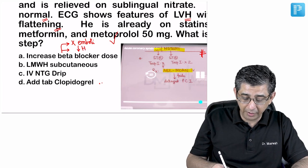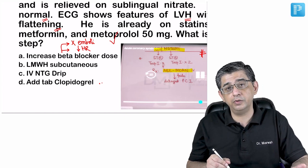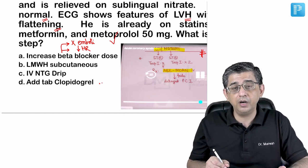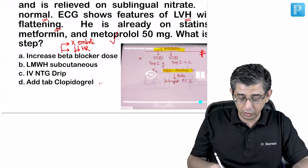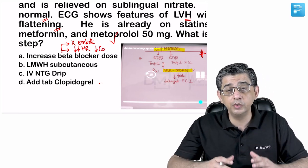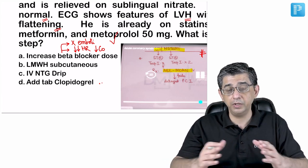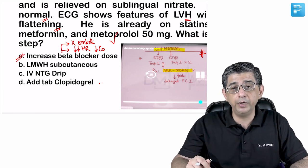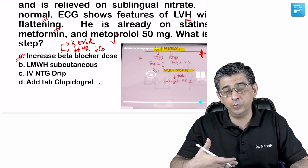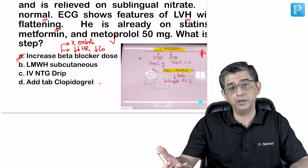If we increase the beta blocker from 50 to 100 mg, the heart rate may drop dramatically. A significantly lower heart rate can decrease cardiac output and coronary blood flow, paradoxically worsening the chest pain. Option A can actually be counterproductive — reduced coronary blood flow may worsen the patient's symptoms.